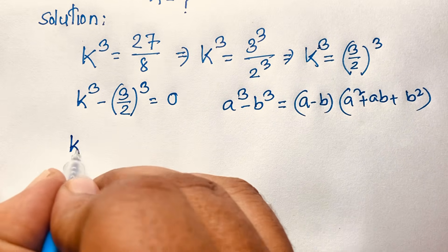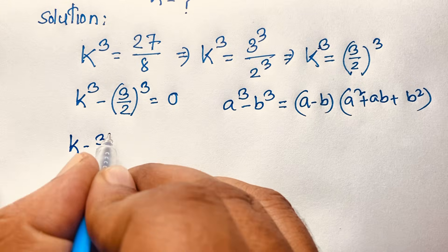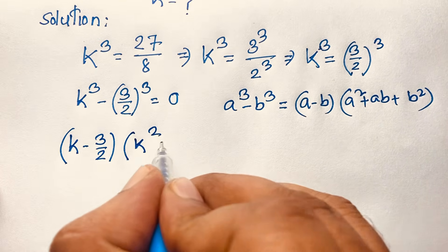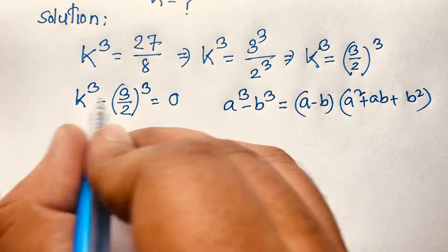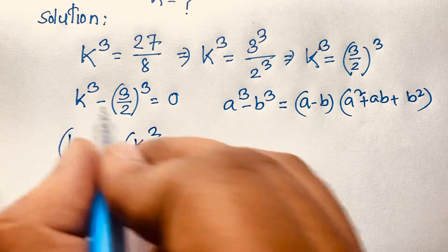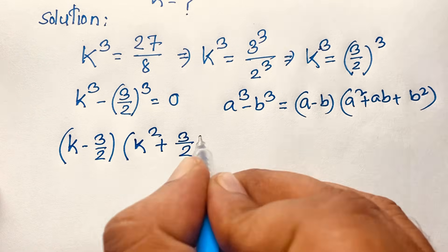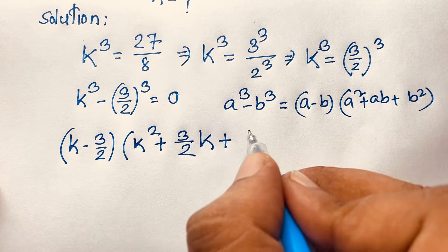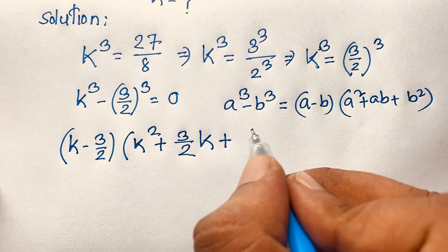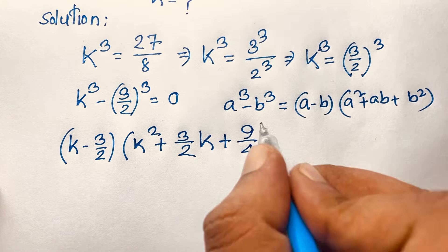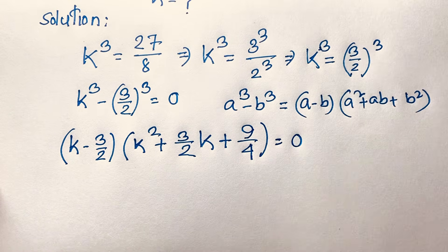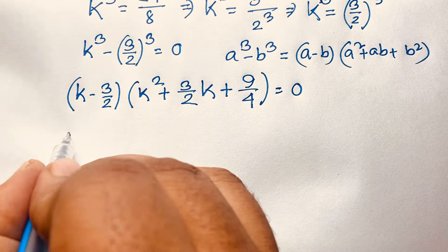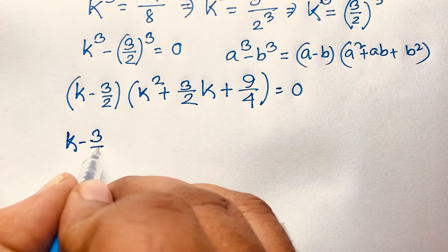Applying the formula, we get: (k − 3/2)(k² + (3/2)k + (3/2)²) = 0, which is (k − 3/2)(k² + (3/2)k + 9/4) = 0.